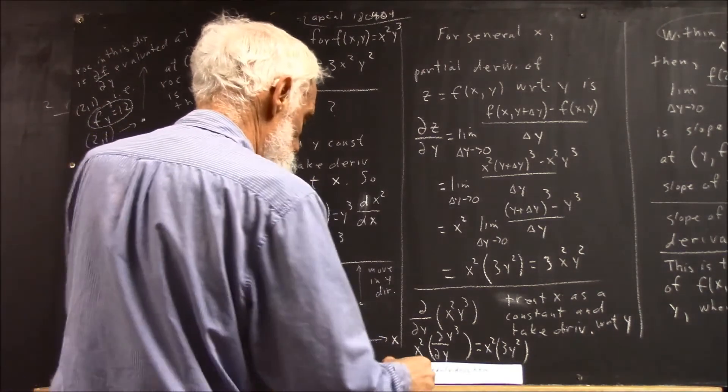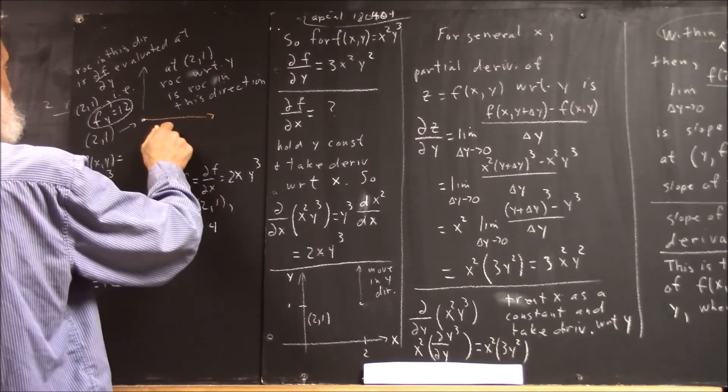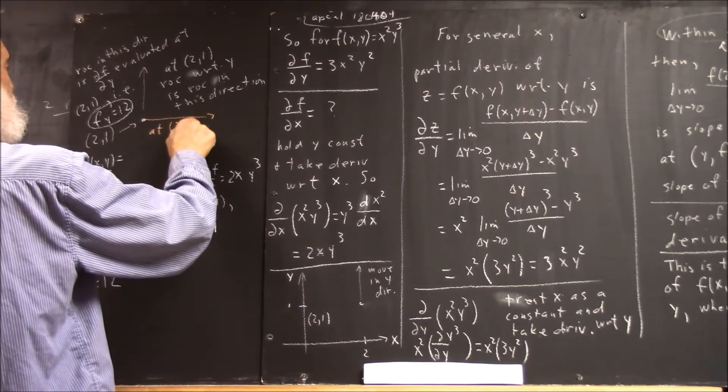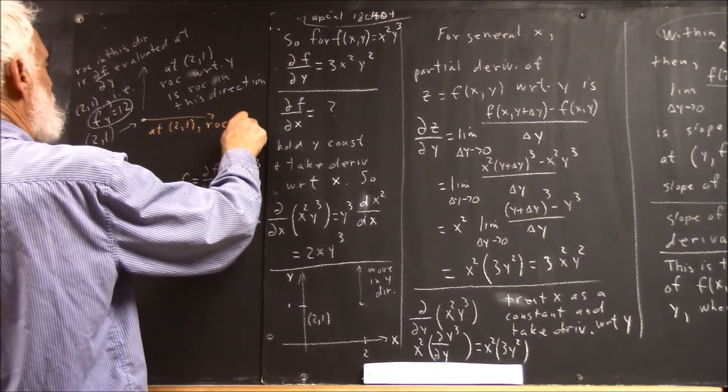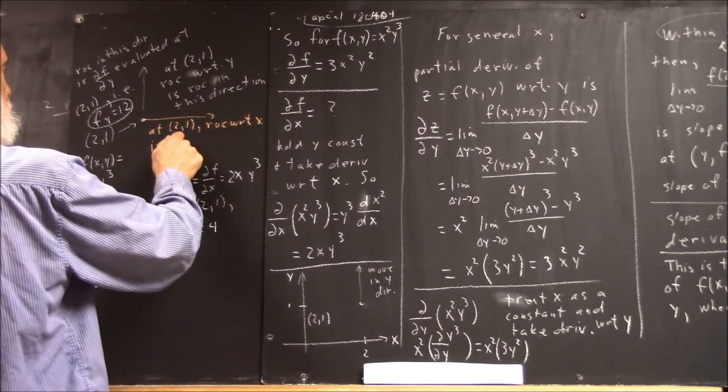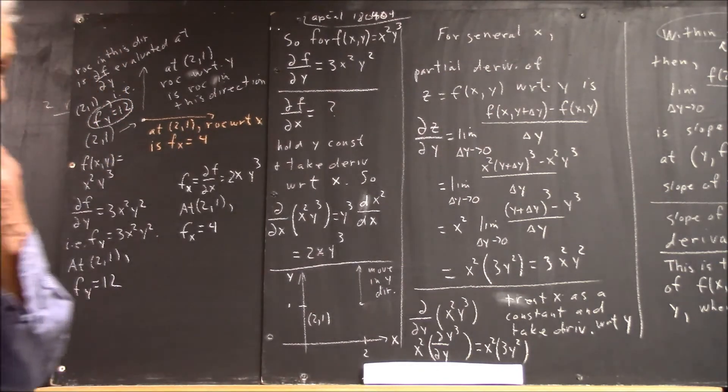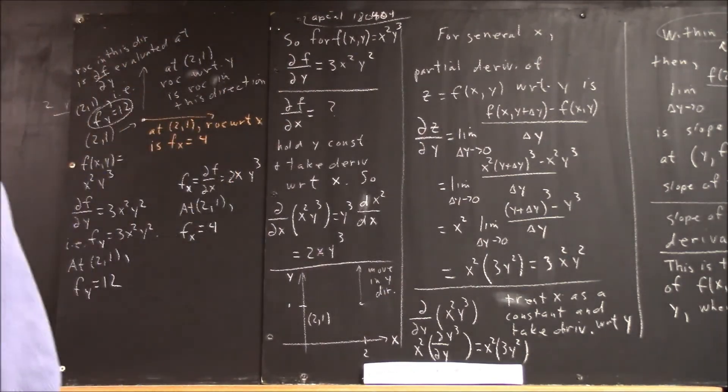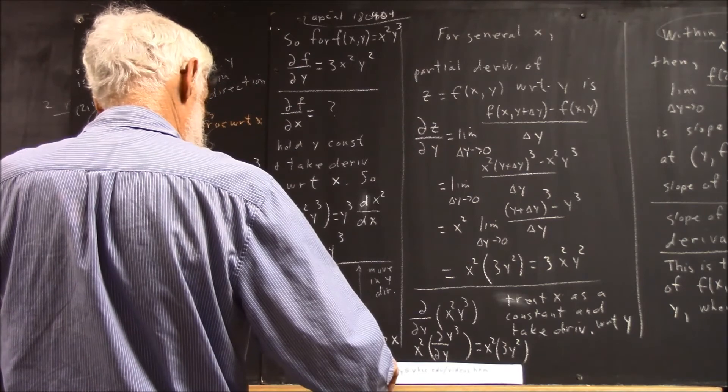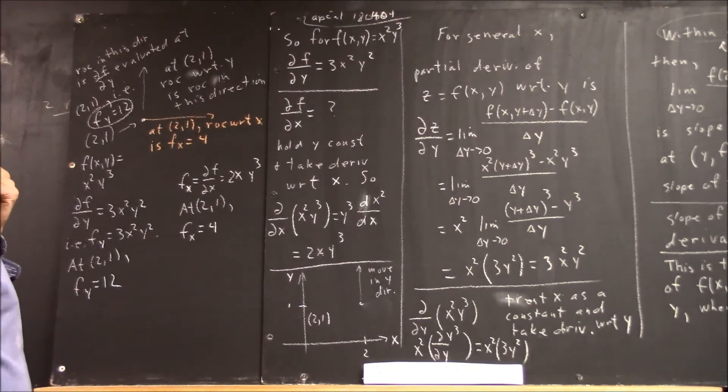So, here's a different color to distinguish directions, otherwise things are going to get awfully ambiguous. Well, so what should be the value of this function at the point 2.1, 1.2?